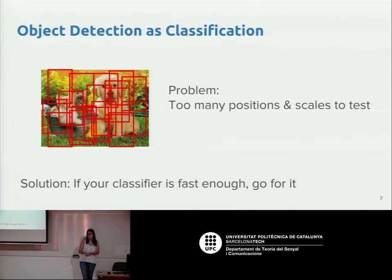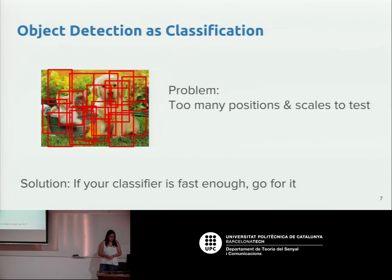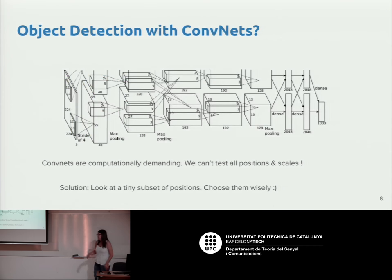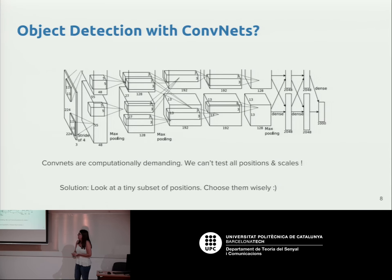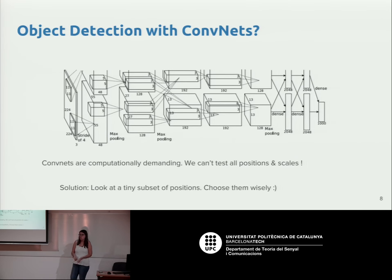If your classifier is fast enough you can analyze all these possibilities, but normally what is done is to choose wisely which regions to analyze. This intensifies even more with CNNs. Nowadays the state of the art in object detection uses CNNs, which require a lot of computation. Analyzing all positions, all scales, and all aspect ratios would be too much, so the key is to choose regions more wisely.